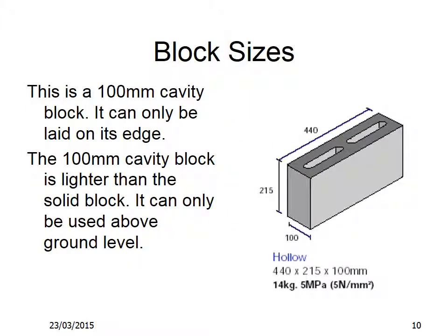This is a 100mm cavity block. It can only be laid on its edge. The 100mm cavity block is lighter than the solid block and can only be used above ground level. It has the exact same dimensions as the 100mm solid block — 440mm long, 215mm high and 100mm thick.